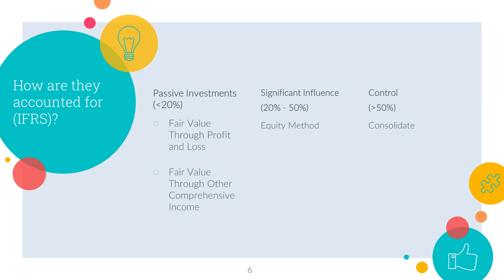For consolidation — owning more than 50% — you have to consolidate that company, which means adding their assets with your assets and their liabilities with your liabilities. When being tested by CPA on these three methods, they normally won't ask you to do a full consolidation because it's a lot of work. So most likely you'll be debating between passive investment and significant influence, and it really comes down to those qualitative factors.